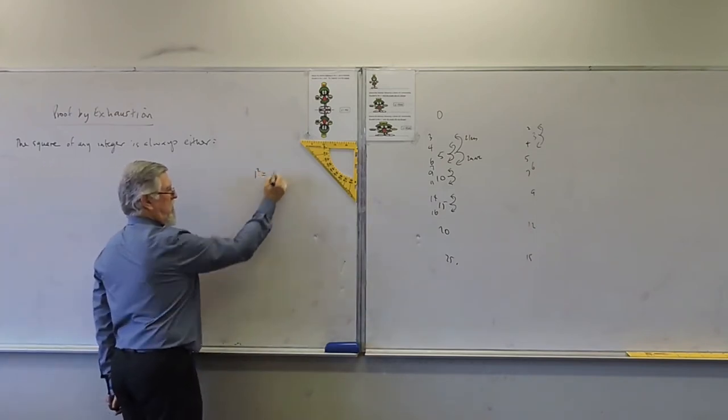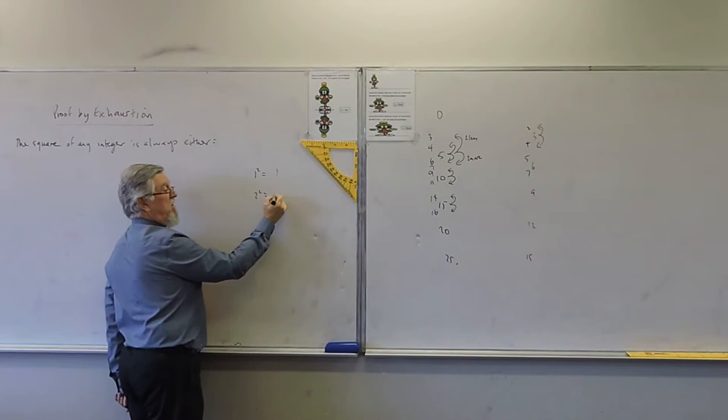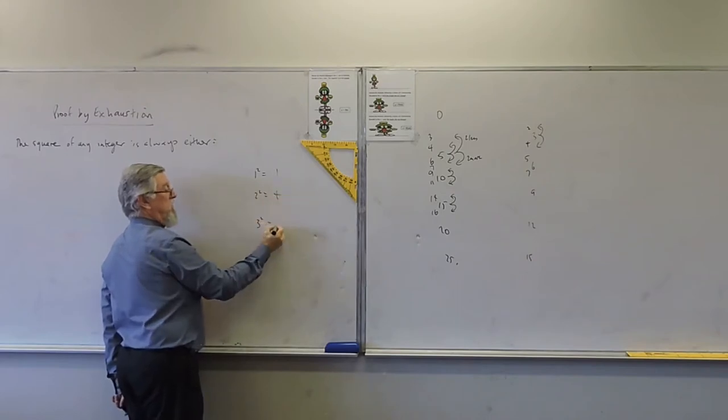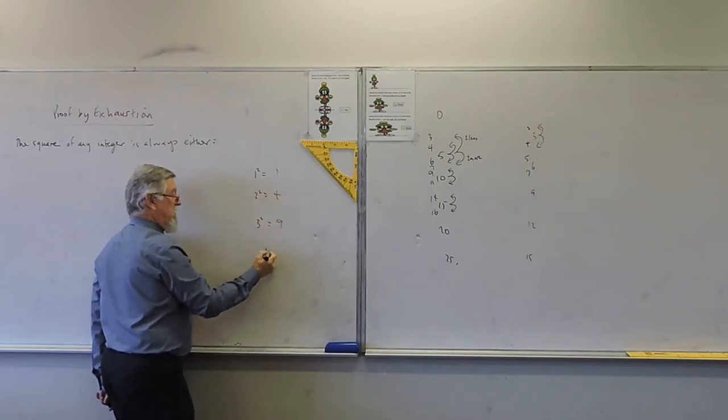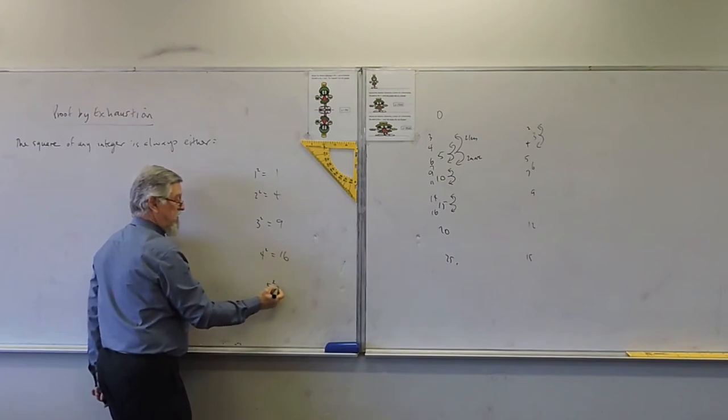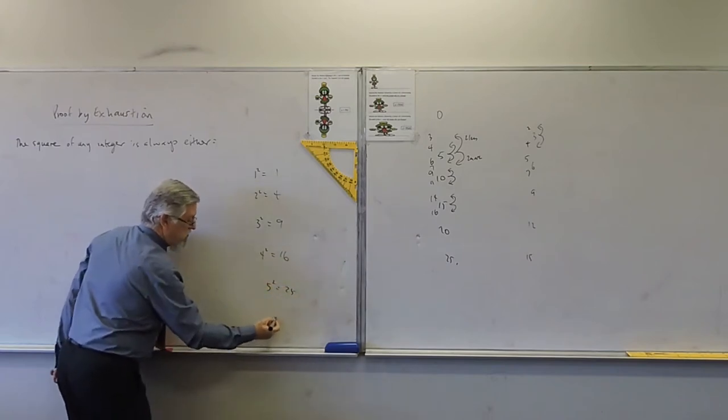One squared is one. Two squared is four. Three squared is nine. Four squared is sixteen. Five squared is twenty-five. We've got one more. Six squared is thirty-six.